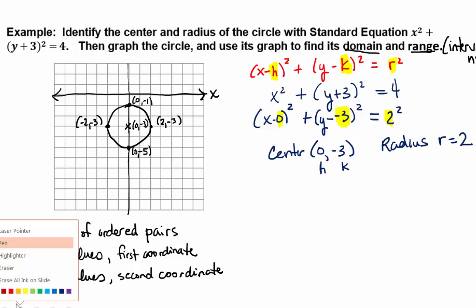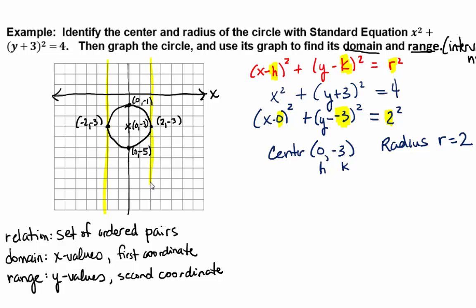So I like to think of finding the domain off of a graph as going from wall to wall. So if I were to draw a wall at the smallest x value furthest to the left and a wall at the largest x value furthest to the right, notice that our circle hits every x value in between, doesn't it?